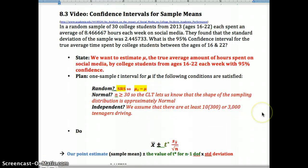Let's look at an example. We've got a random sample of 30 college students from 2013, and each spent an average of 8.46 hours each week on social media. They found that the standard deviation of the sample is 2.445733. This is more digits than we need to include. We usually round to the nearest hundredth or thousandth. Here we're trying to find the 95% confidence interval for the true average time spent by college students between the ages of 16 and 22. We are going to use, as usual, state, plan, do, and conclude. State, we state what we're trying to solve. Basically, this whole way of solving would allow the problem to stand by itself without looking at this. So if somebody just looked at your work, they'd know what the problem you're trying to solve, what parameter you're trying to estimate, what your confidence level is.